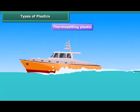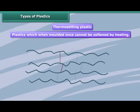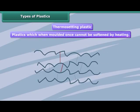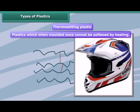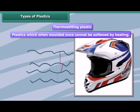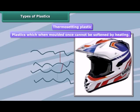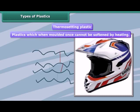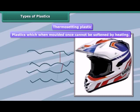Thermosetting plastics have a cross-linked arrangement of their constituent units. These can be melted and take shape once only. After they have solidified, they stay solid. On subsequent heating, they do not become soft and hence do not change their shape. Therefore, these cannot be recycled.